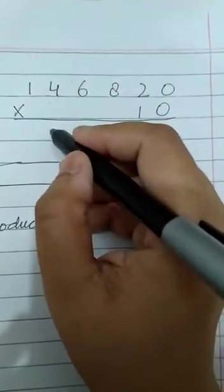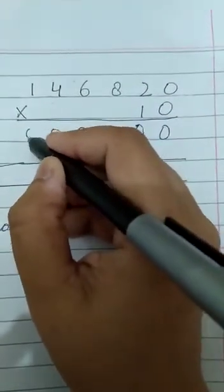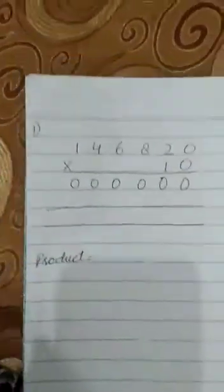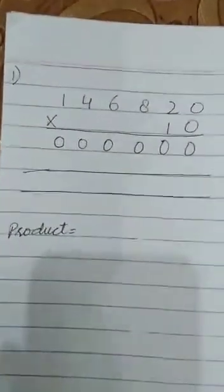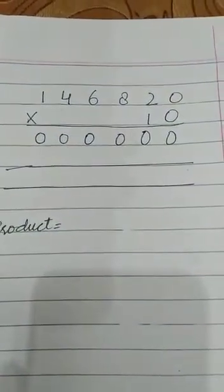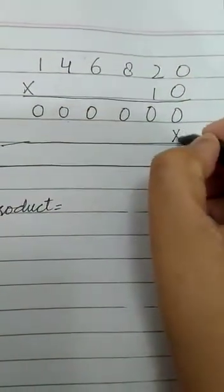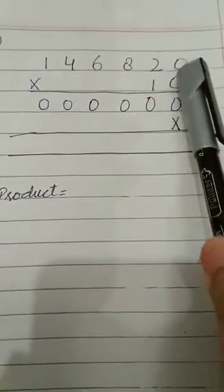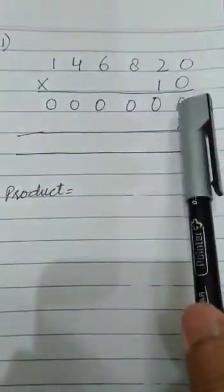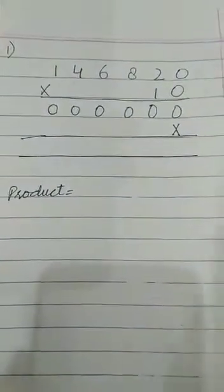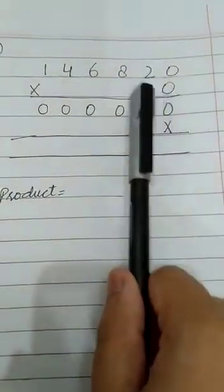Continuing: 0 × 6 = 0, 0 × 4 = 0, 0 × 1 = 0. Since the unit place number is over, we write a cross over the unit place because 0 is at the unit place and we multiplied 0 with the whole number. So we write the cross over the unit place and move to 10, which is at the tens place — that is 1.